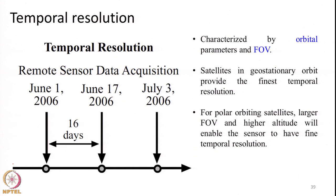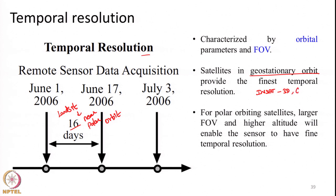Temporal resolution means how frequently we can get the data. For example, Landsat satellites provide data once every 16 days — this is in near polar orbit. Similarly, satellites in geostationary orbit such as INSAT 3D or GOES give data once every 30 minutes. This is geostationary.